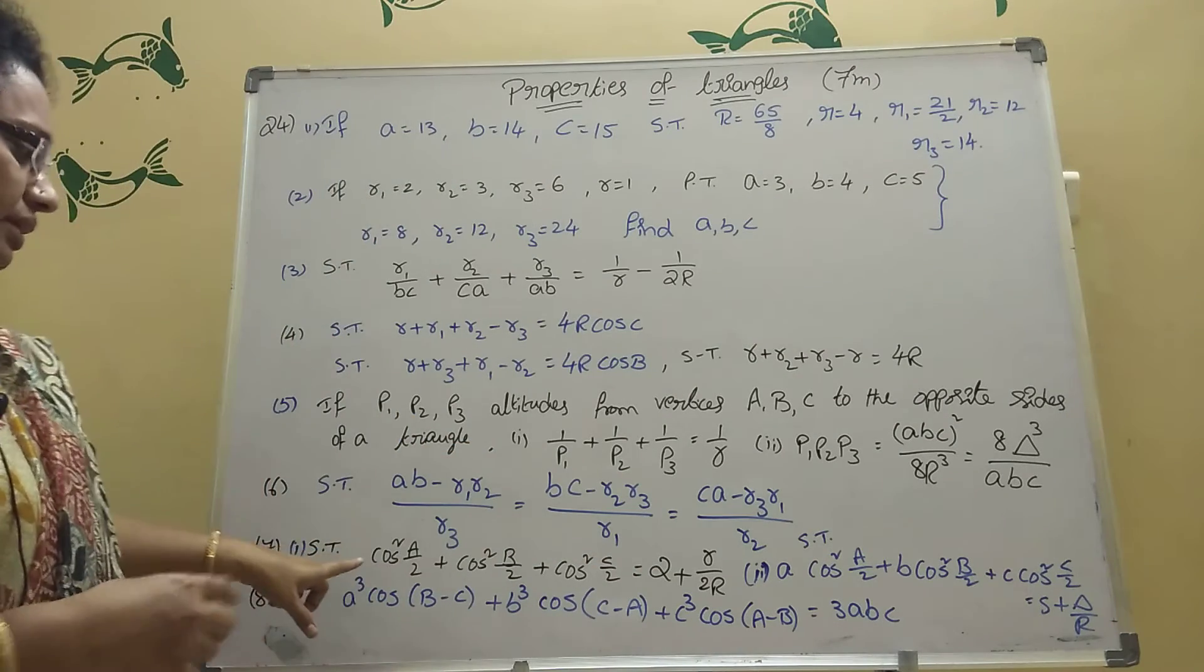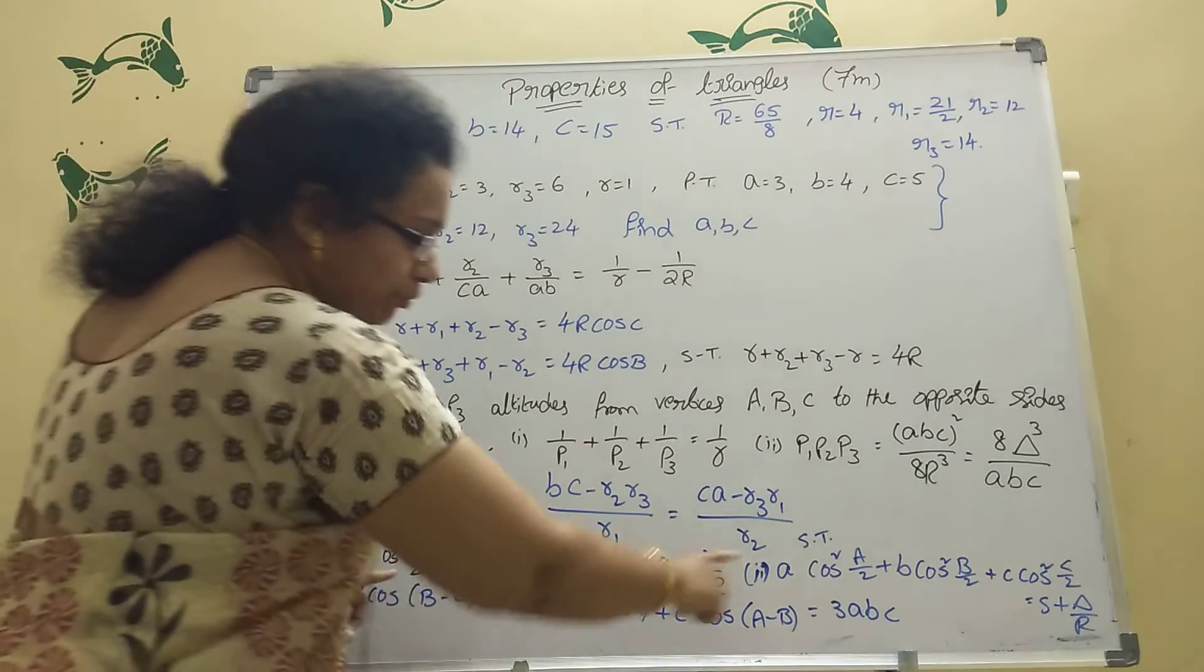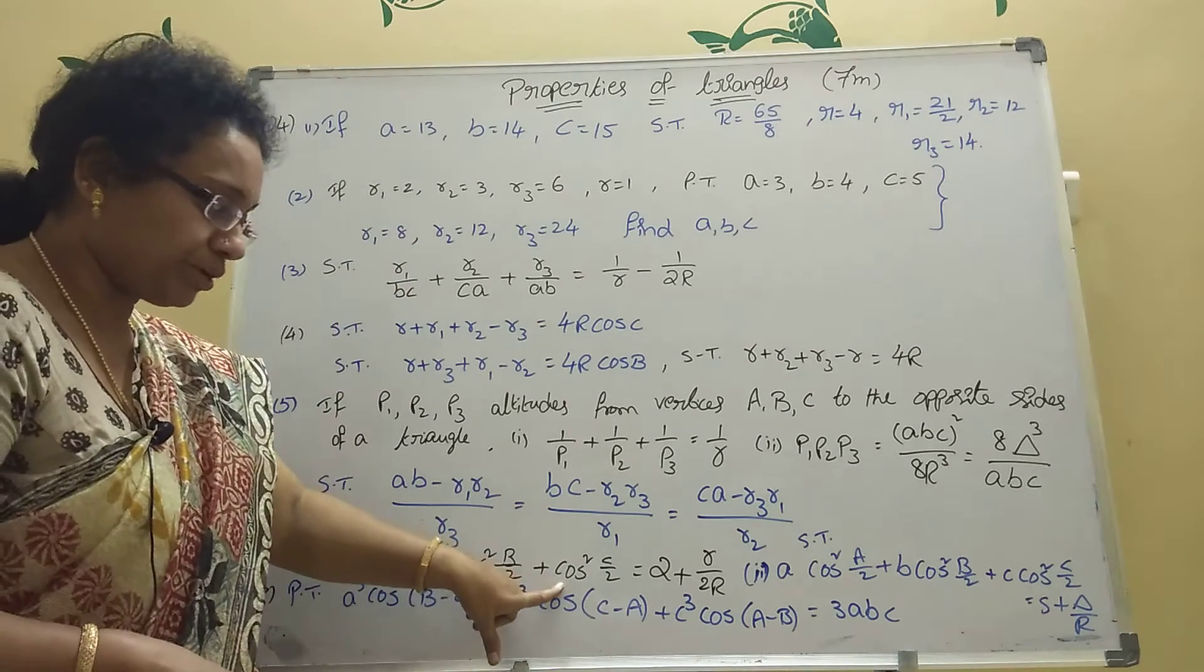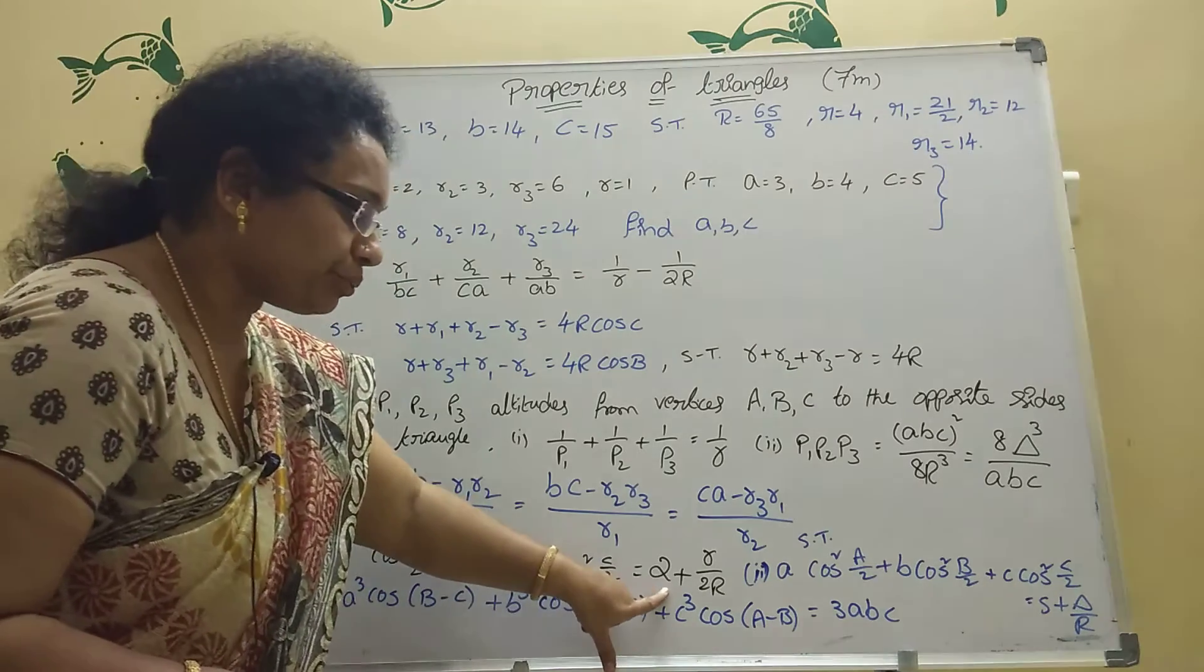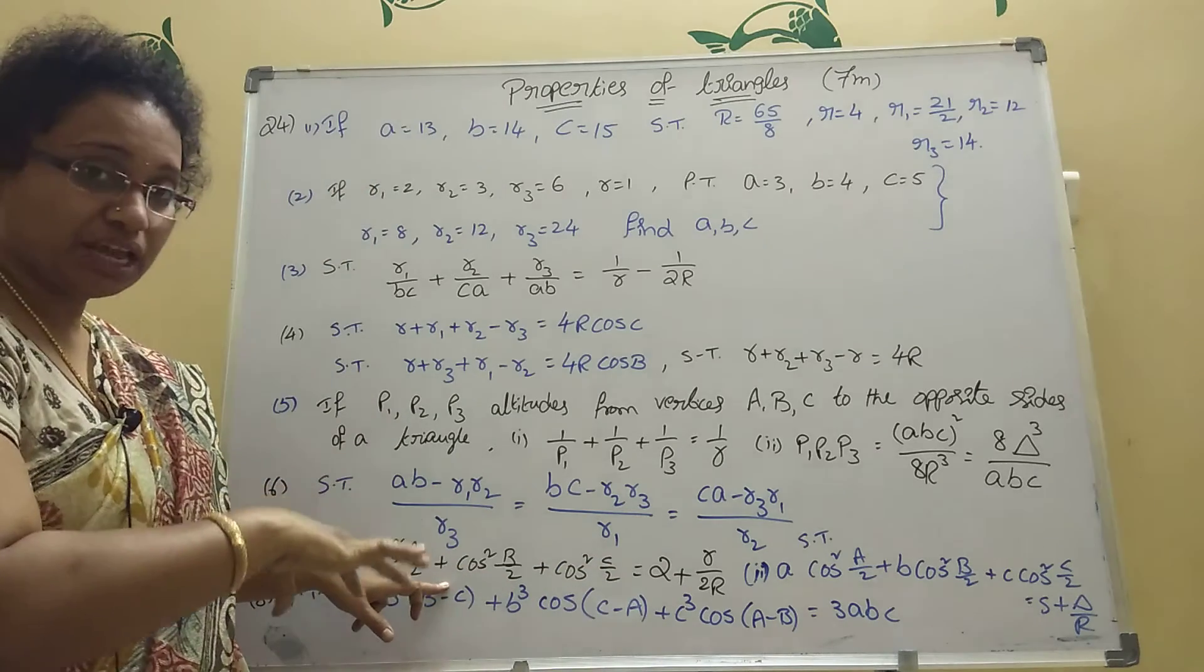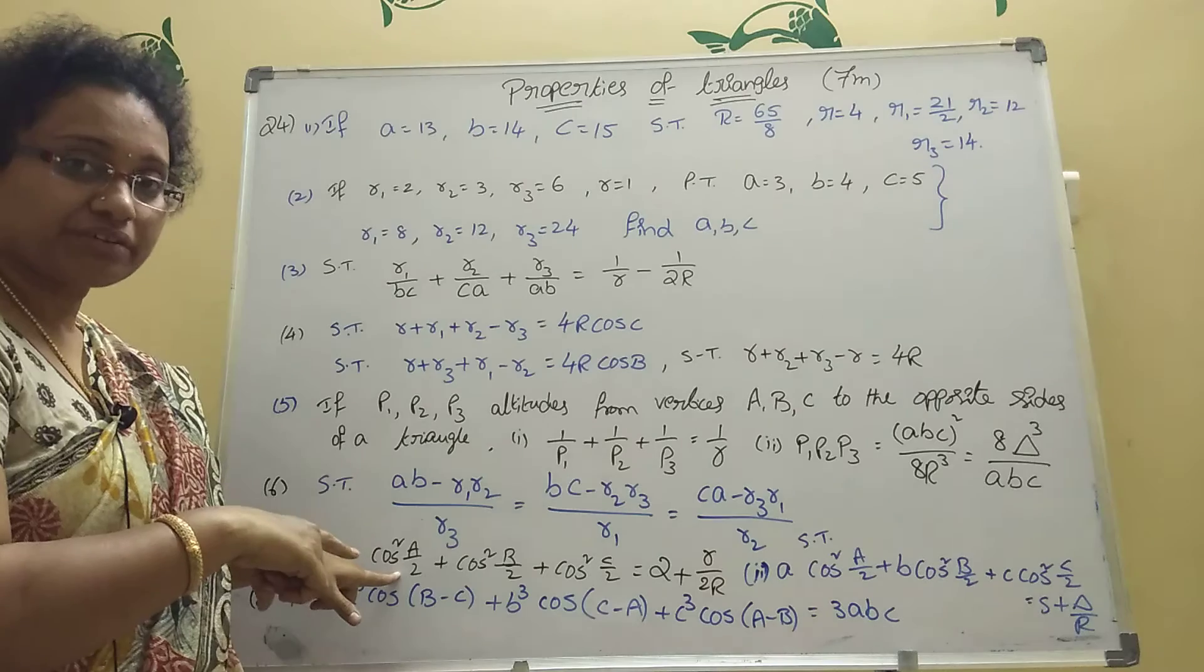Then here seventh bit. Here in seventh bit, two models, same model only there. See here. Cos square A by 2 plus cos square B by 2 plus cos square C by 2 equal to 2 plus R by 2R is the easy model. Here transformation models there, use that formula only. What is the formula? Cos square A by 2.